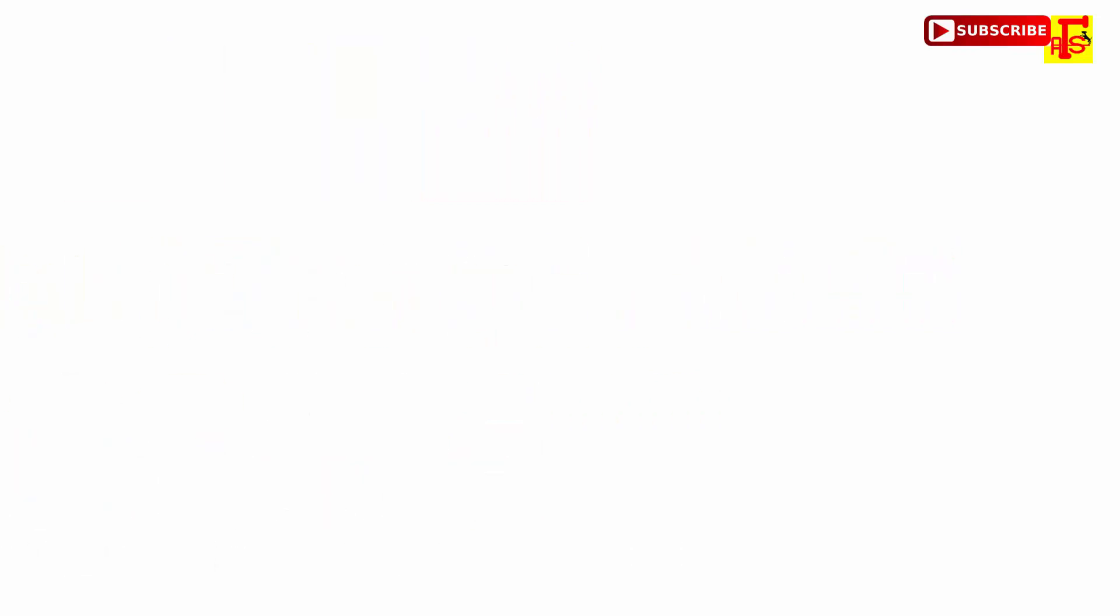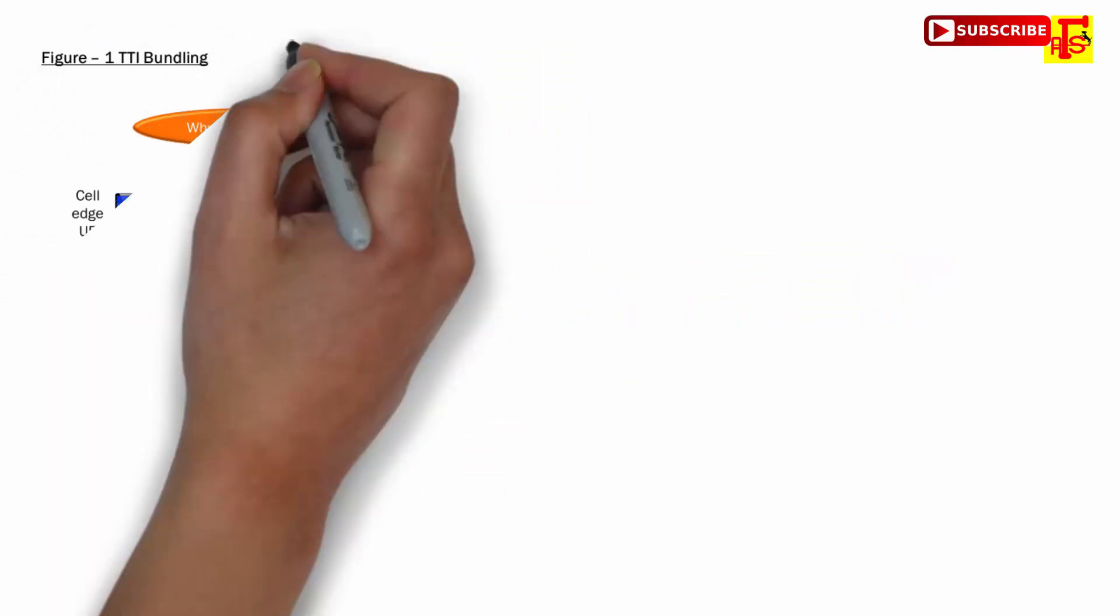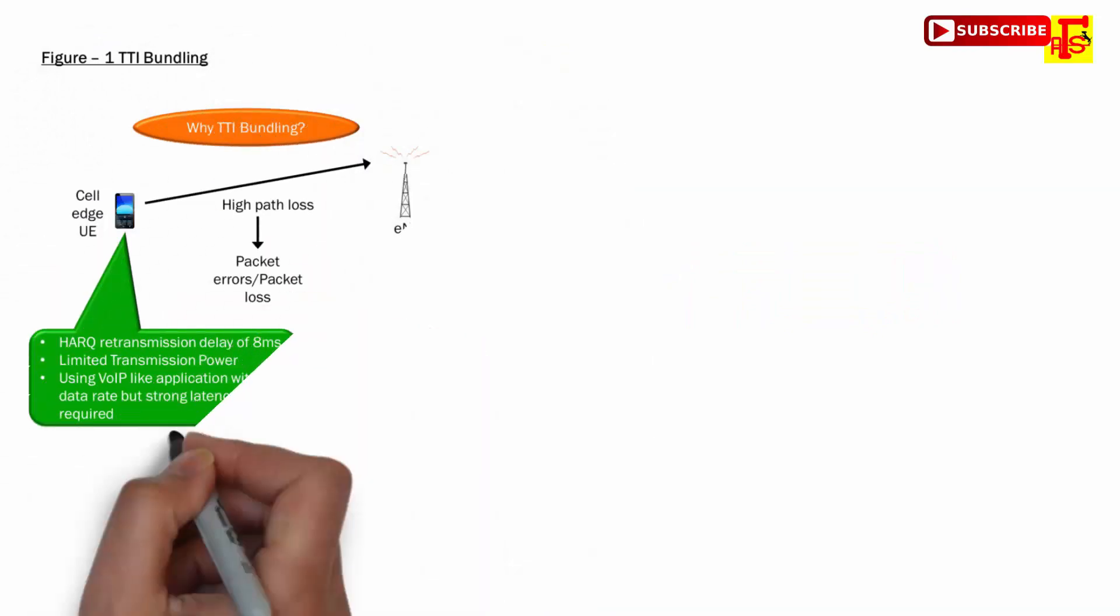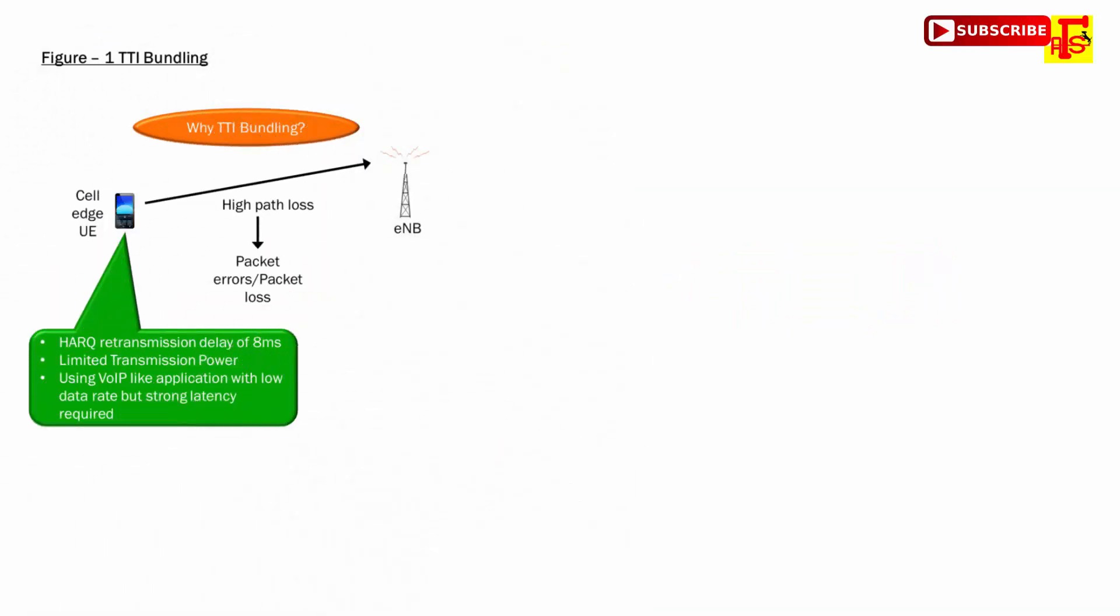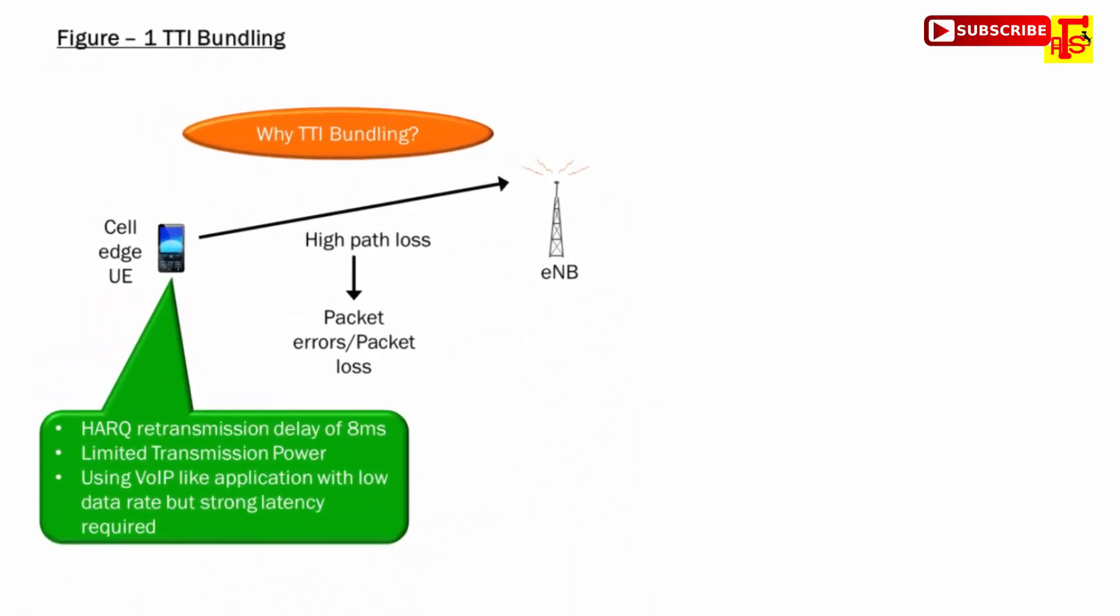Uplink transmission time in cell edge is limited by power. If there is poor radio condition, then there will be delay in packets. Packet delay occurs due to retransmission from the HARQ process. Something happens there because of the control plane overhead. Overhead will increase. So services like VoIP call or VoLTE call are affected.